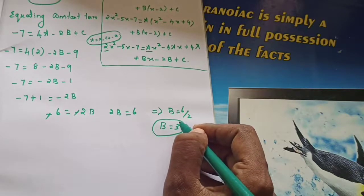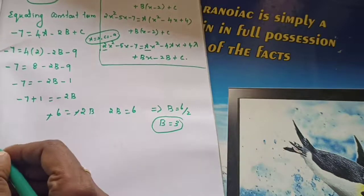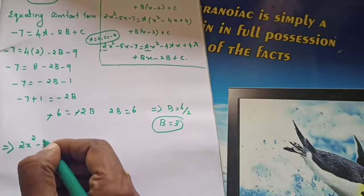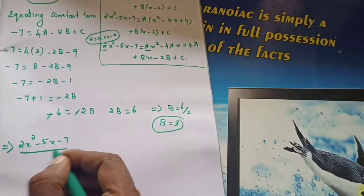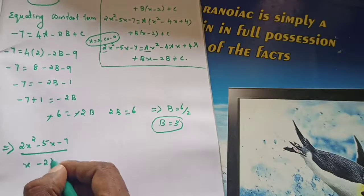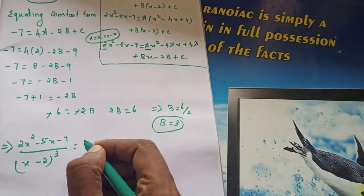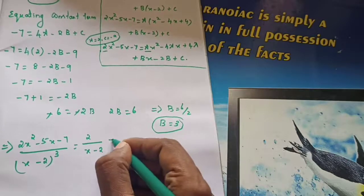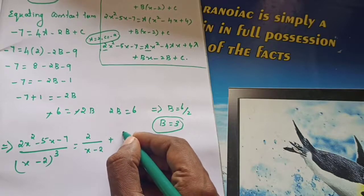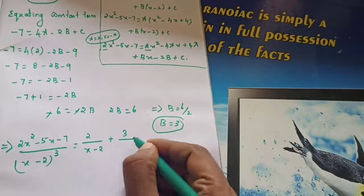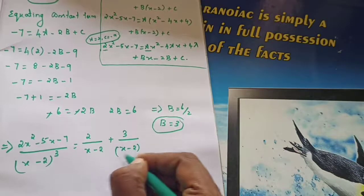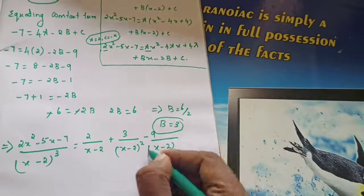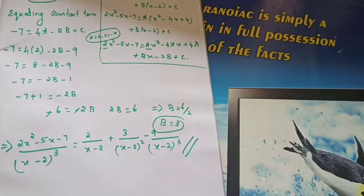Now we have all values. Substituting in equation number 1: 2x squared minus 5x minus 7 divided by x minus 2 whole cube equals 2 by x minus 2, plus 3 by x minus 2 whole squared, plus minus 9 by x minus 2 whole cube. This is the required answer.